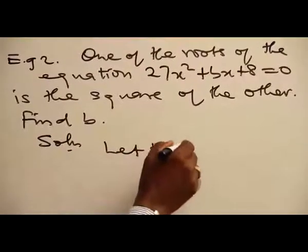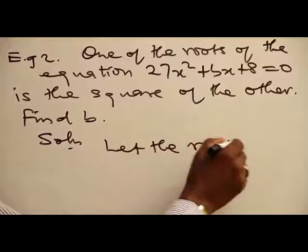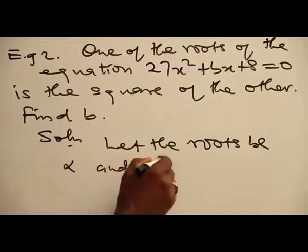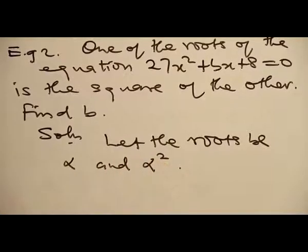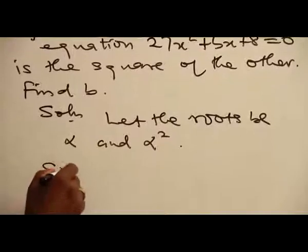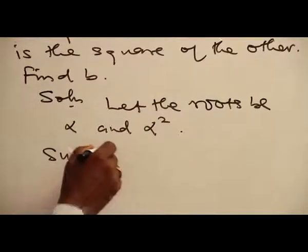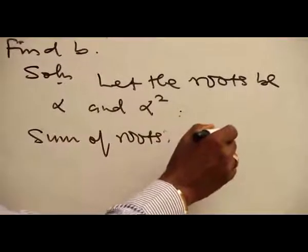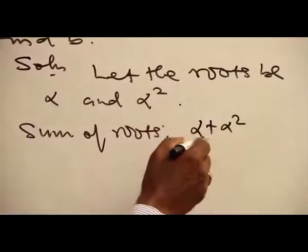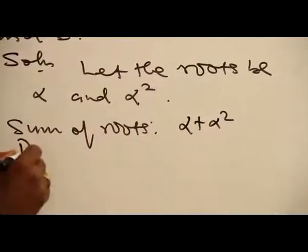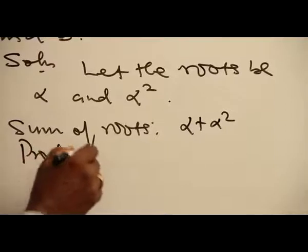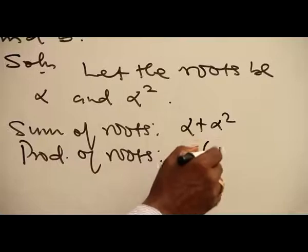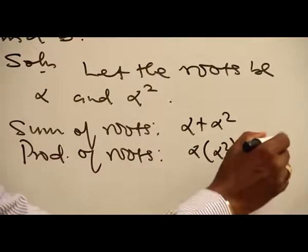let the roots be alpha and alpha squared. Of course, the sum of roots will be alpha plus alpha squared, and the product of roots is alpha times alpha squared, which gives you alpha cubed.